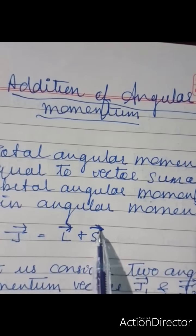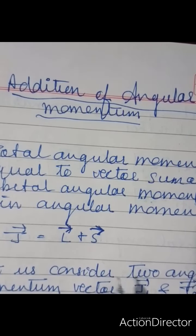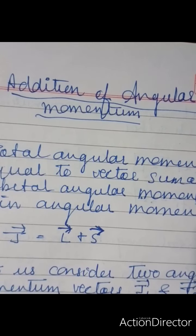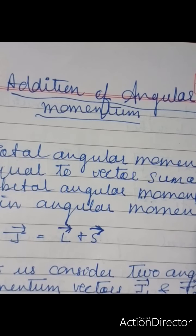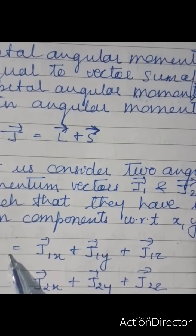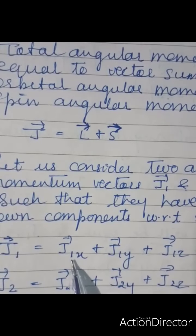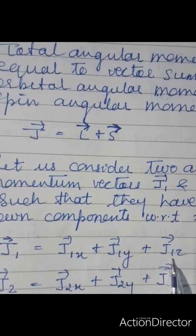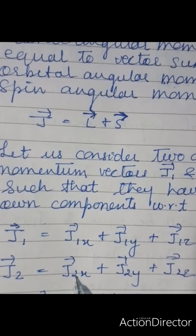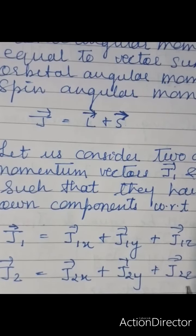First of all, let us consider two angular momentum vectors, vector J1 and J2, such that they have their own components with respect to the x, y, and z axes. So J1 will be denoted by vector J1x, J1y, and J1z. Similarly, J2 will be denoted by vector J2x, J2y, and J2z.